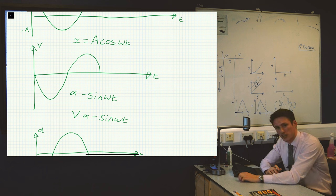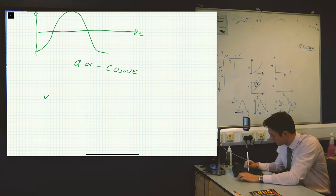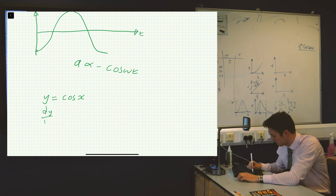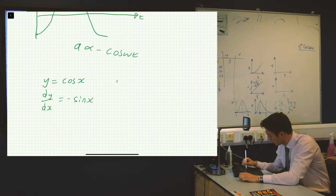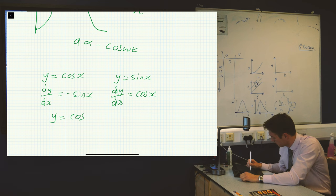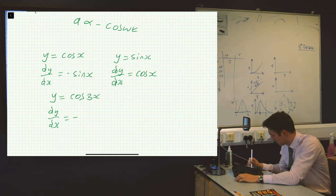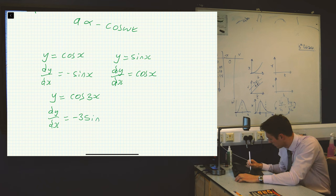There's another way to do it, and that's with differentiation. If you haven't differentiated sine and cosine curves before, don't worry — you can look it up. But you should know: if y equals cosine x, then dy/dx equals minus sine x. If y equals sine x, then dy/dx equals cosine x. If y equals cosine of 3x, for example, then dy/dx equals minus sine x, except we have three times in front, so it's minus 3 sine 3x.